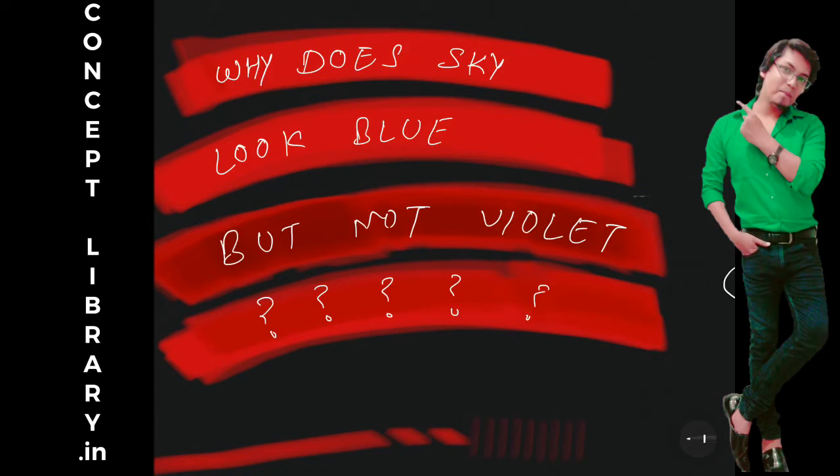So guys welcome, I hope you are looking for the right thing - why does sky look blue but not violet? Because if you are a technical person you might be thinking like wavelength of violet is less so scattering must be more, so our sky must look violet but it doesn't happen, our sky looks blue.